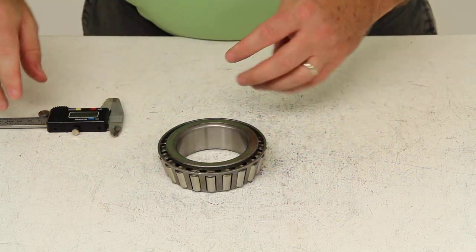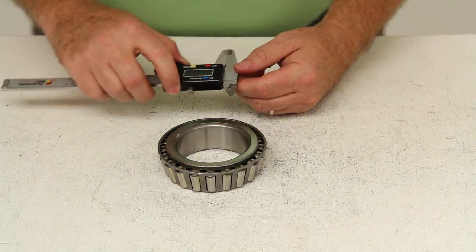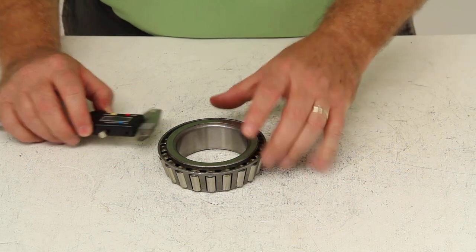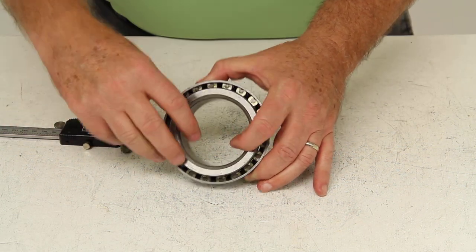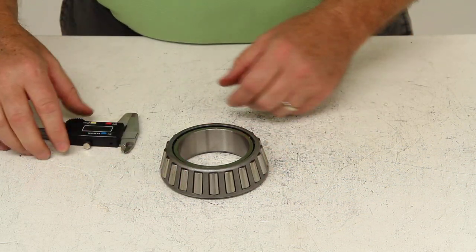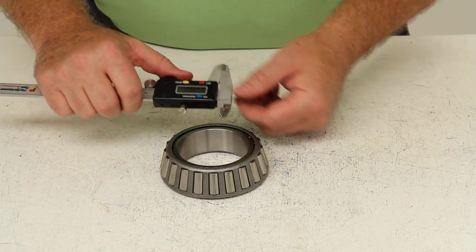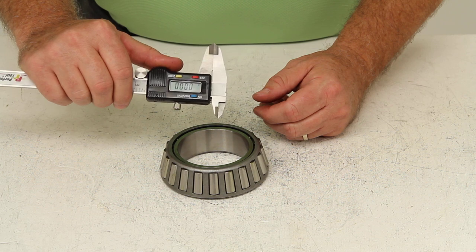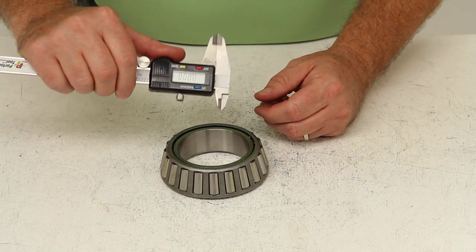One of the most critical measurements when replacing your wheel bearings is the inner diameter. This part right here needs to match what you have on the trailer right now. To get an accurate measurement, you would need to use either a dial or digital caliper like we have here.